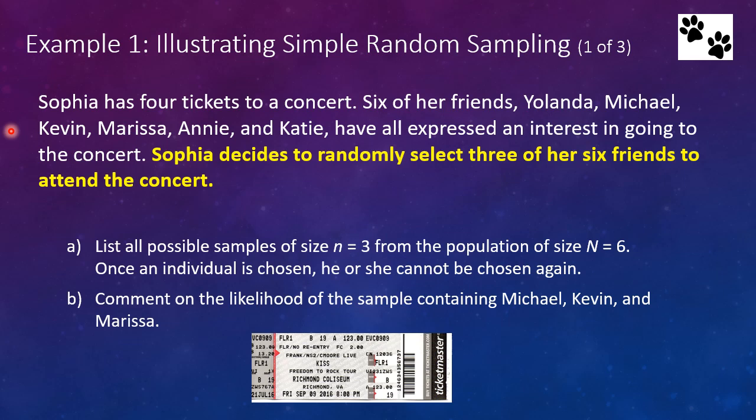Now this comment about once an individual is chosen he or she cannot be chosen again, you may say, 'well, duh, I can't take Michael, Michael, and Kevin to the concert because there's only one Michael.' But there are cases where you can select the same individual for a sample multiple times. Okay, and we'll get more into those details later on. So this is a good time to hit pause and see if you can do this. Again, what you're trying to do, it's a little bit complicated sometimes using a tree chart or other ways can help it. Often it's just, you know, starting with Yolanda and Michael and then doing the next name.